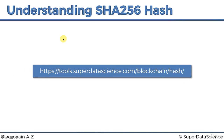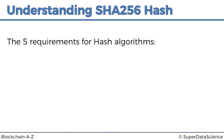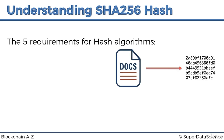Now let's look at the five requirements for hash algorithms. SHA-256 is not the only one — there's also SHA-512, SHA-3, and others. Requirement number one is that it must be one-way: you cannot go backwards from the hash to the document. You cannot reverse-engineer the original document based on the hash.